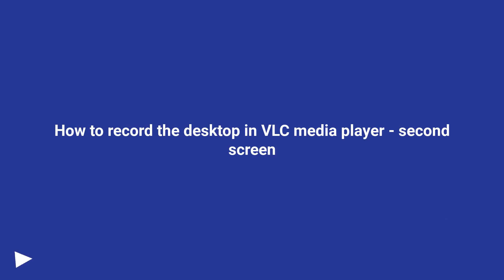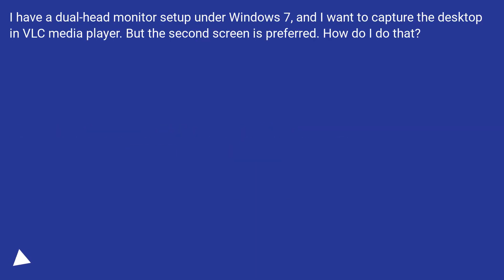How to record the desktop in VLC Media Player on a second screen. I have a dual head monitor set up under Windows 7, and I want to capture the desktop in VLC Media Player, but the second screen is preferred. How do I do that?